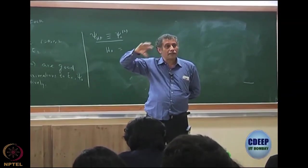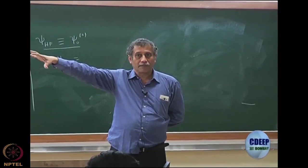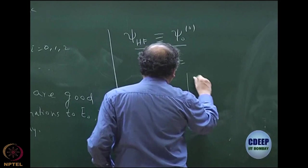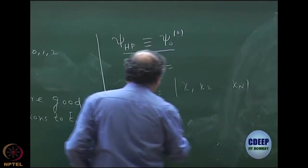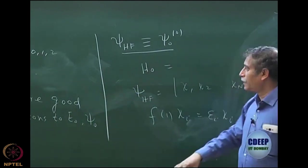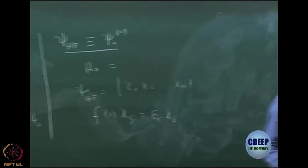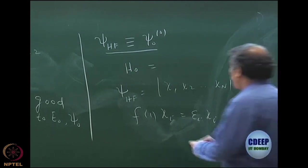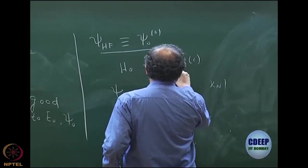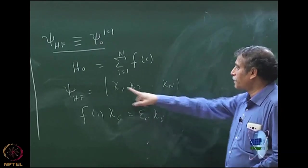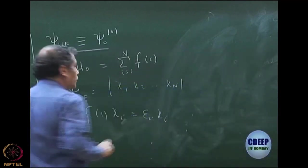Think in reverse: we have a non-interacting theorem which says if an operator is a sum of one-particle operators whose solutions are known, then the total eigenfunction is a product of those one-particle functions. So ψ_HF is a product of spin orbitals χ₁, χ₂, …, χₙ, and I know a one-particle operator F(1) whose eigenfunctions are these χᵢ's. Therefore H0 is the sum of Fock operators, and ψ_HF — as an antisymmetrized product — is an eigenfunction of H0 with eigenvalue equal to the sum of orbital energies εᵢ.